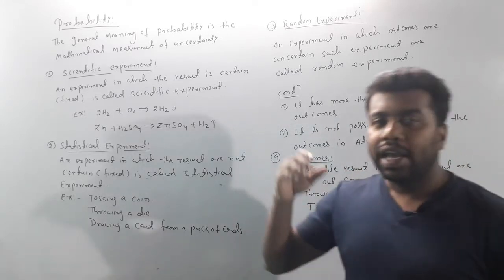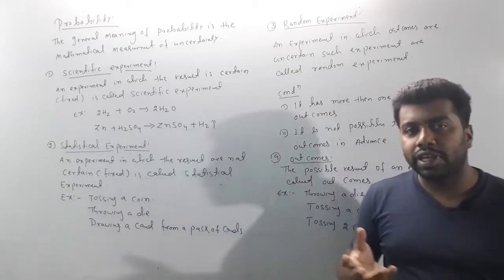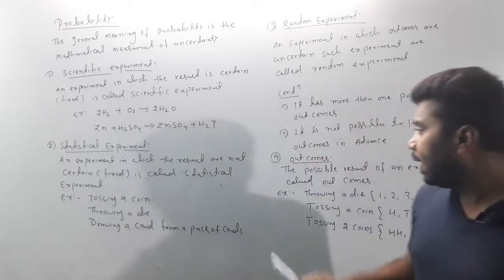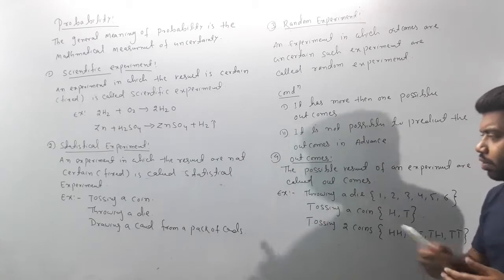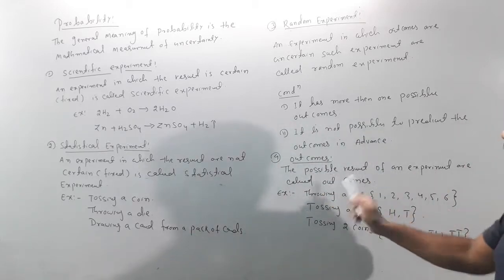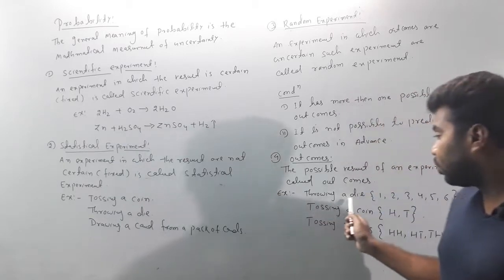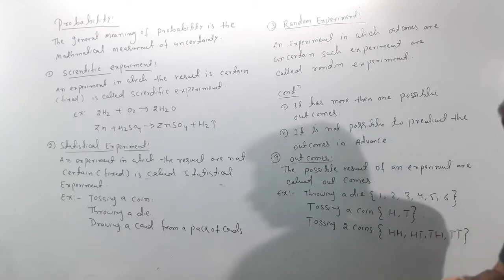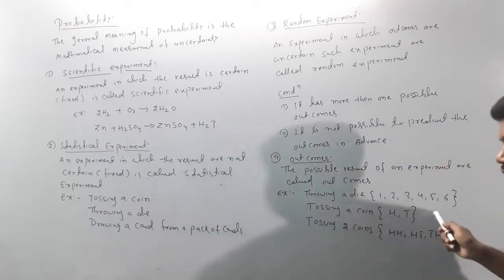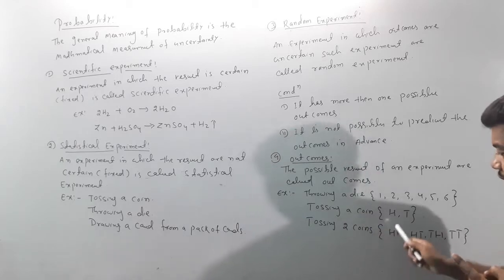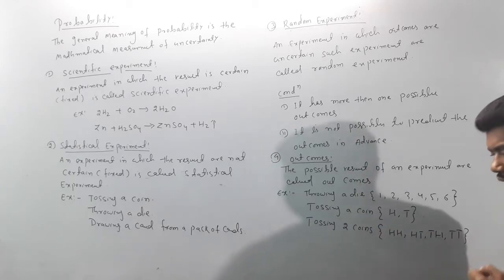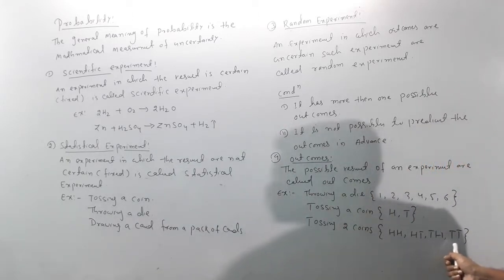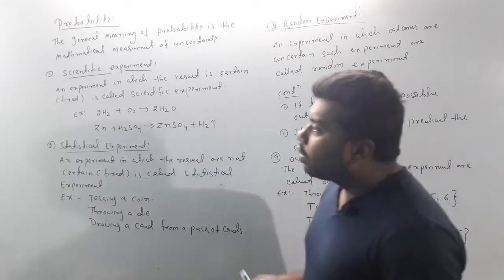It cannot be possible to predict outcomes in advance. When we throw a die, we don't know 100% whether the outcome will be 6, 5, 4, or any other value. Tossing one coin gives either head or tail. Tossing two coins gives head-head, head-tail, tail-head, or tail-tail.